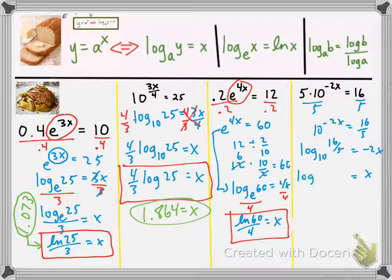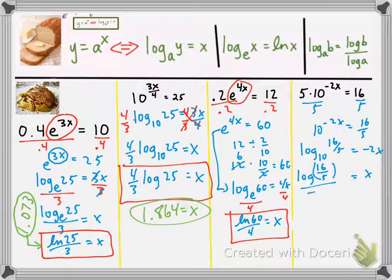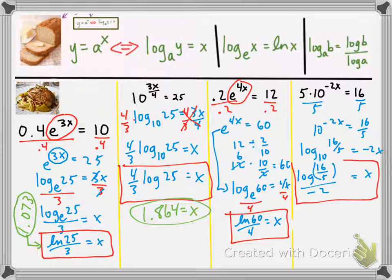And therefore, when we divide both sides by negative 2, we have log of 16 over 5 divided by negative 2. And that's the value for x. And that's it.